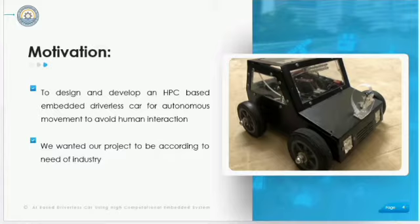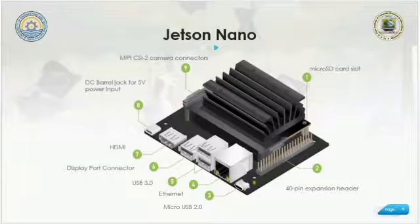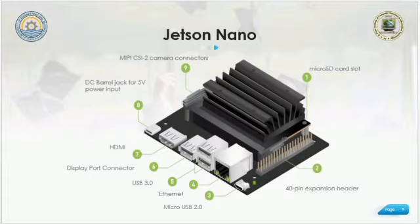This is the Jetson Nano that we are using in our project as a GPU. A GPU is basically a graphical processing unit that is used for fast processing in the case of graphical data. The Jetson Nano computes data at high speed — it has 128 cores with Maxwell architecture.